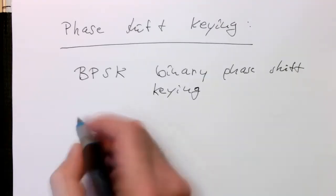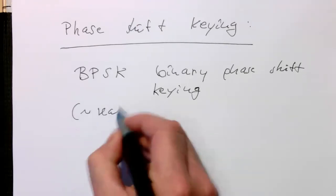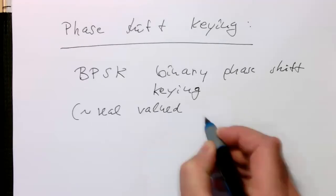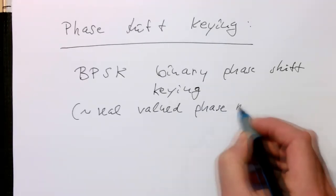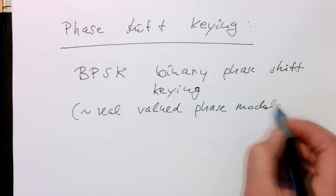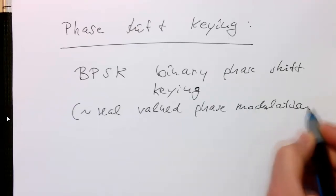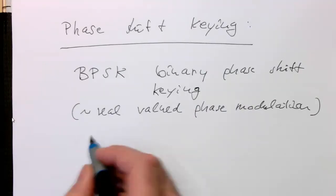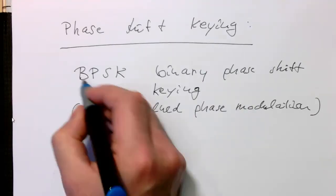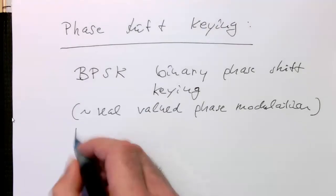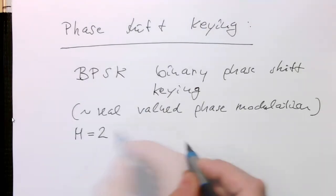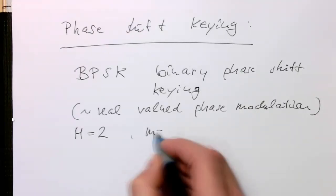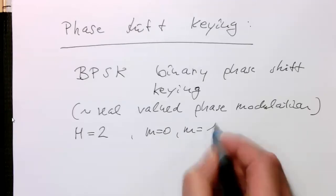So that's equivalent to a real valued phase modulation. So we could write this. Remember the binary phase shift in this case would be with M equals 2, and so that we have a symbol which is M0 and a symbol which is M1.